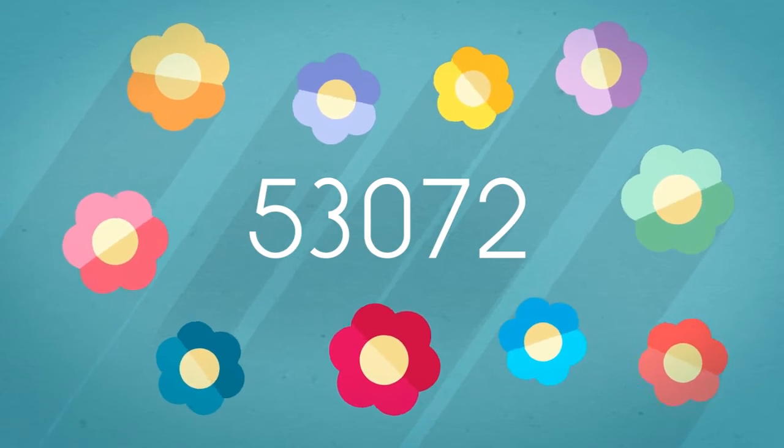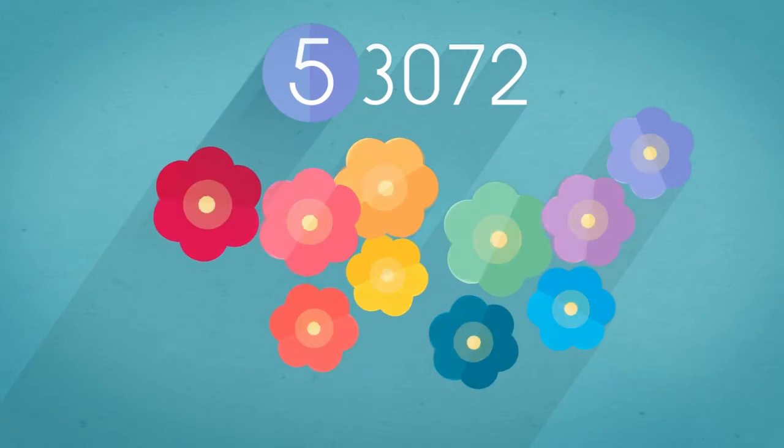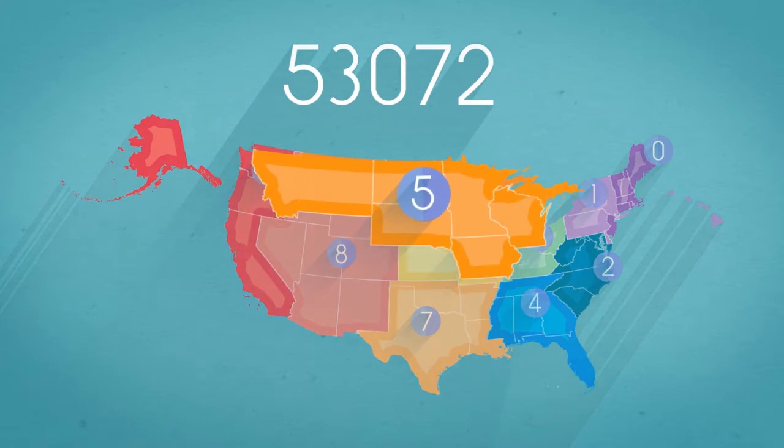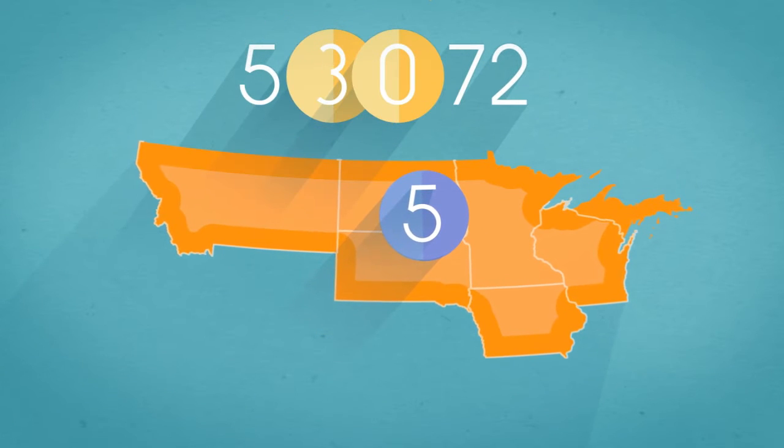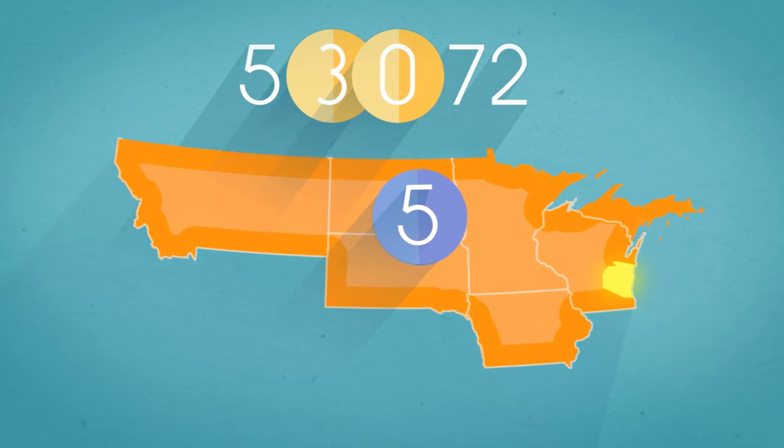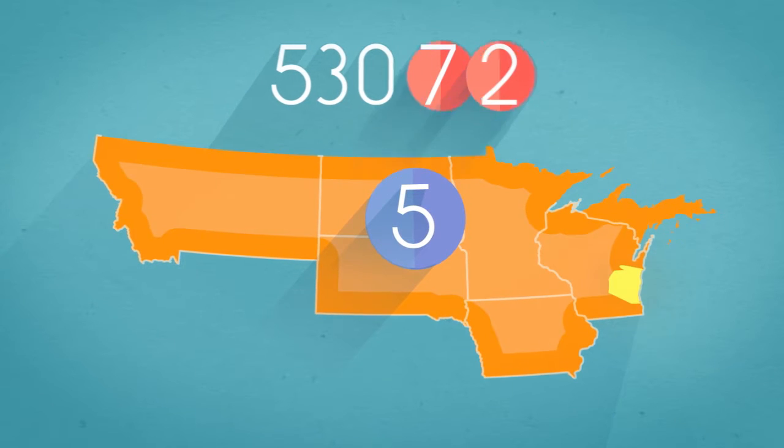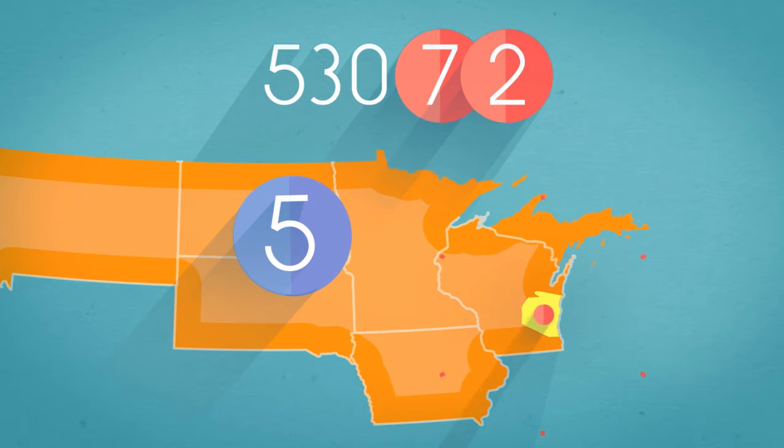Sound complicated? It's not. The first number represents one of ten national areas. The next two, combined with the first, represent a section within that national area. And the last two designate a specific post office.